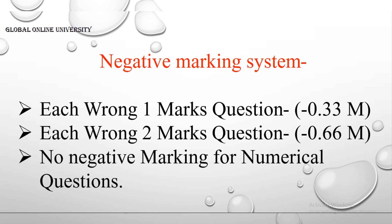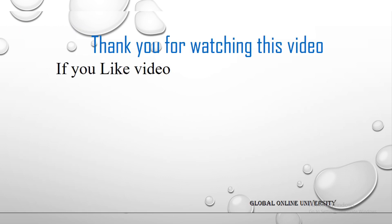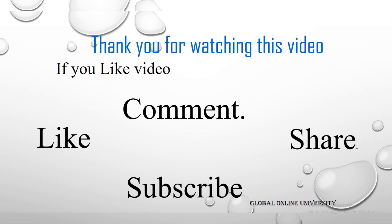There will be no negative marking for numerical questions. For example, a question like 'What is the number of possible stereoisomers for cyclohexane?' will have a numerical answer, and for such numerical answers there is no negative marking. So you can calculate the answer and write it without worrying about negative marking. Thank you for watching this video. If you like this video, please like, comment, share and subscribe to our channel, Global Online University.